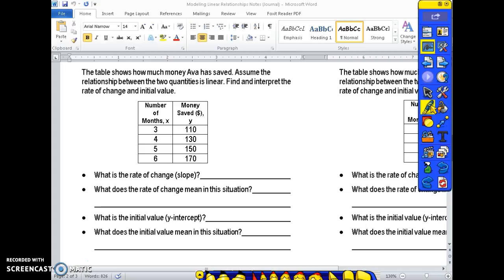To find the rate of change of the table I look at the change in the x value. To get from 3 to 4 I add 1. 4 to 5 add 1. 5 to 6 I'm adding 1. Changing my y value to go from 110 to 130 I add 20. 130 to 150 add 20. 150 to 170 I add 20. So we know that the rate of change from our previous unit is the change in y over the change in x and 20 over 1 equals 20. So my rate of change is 20.